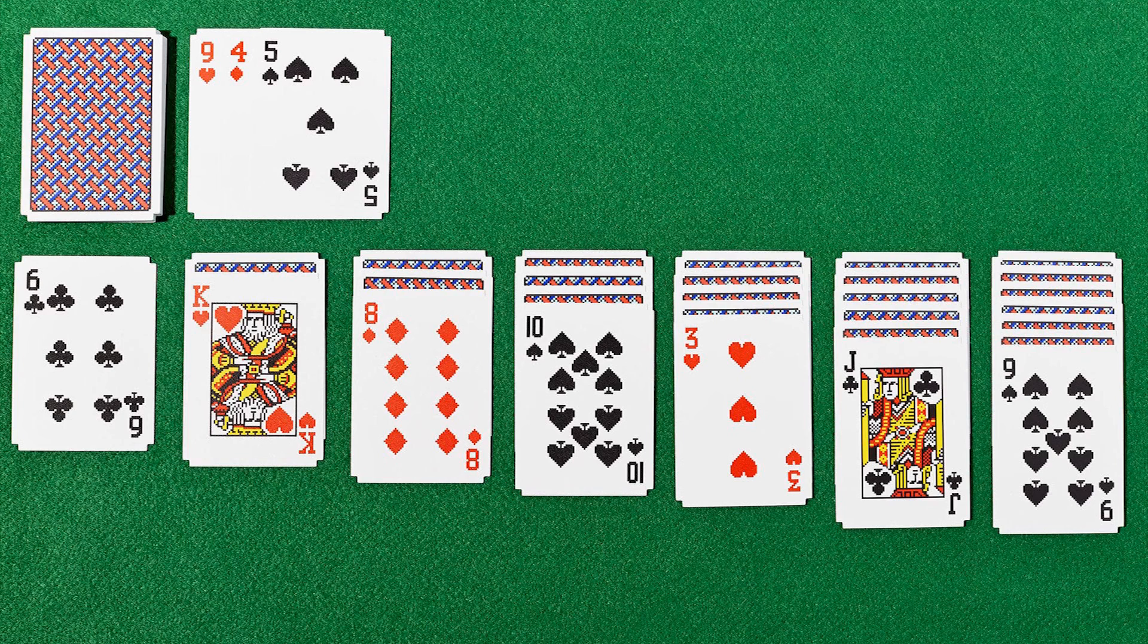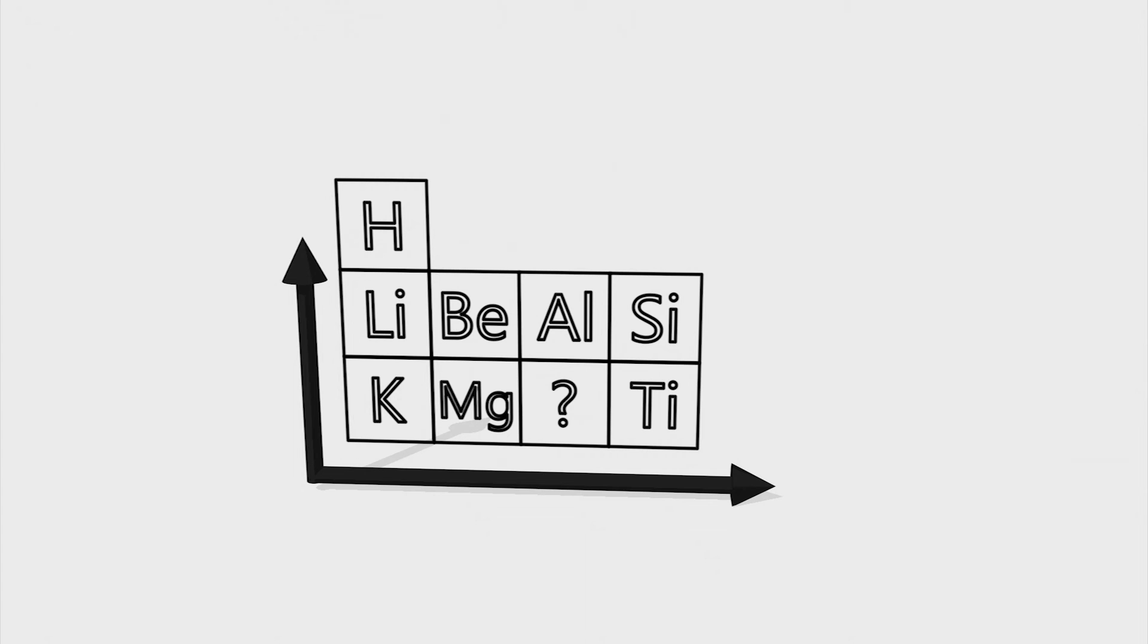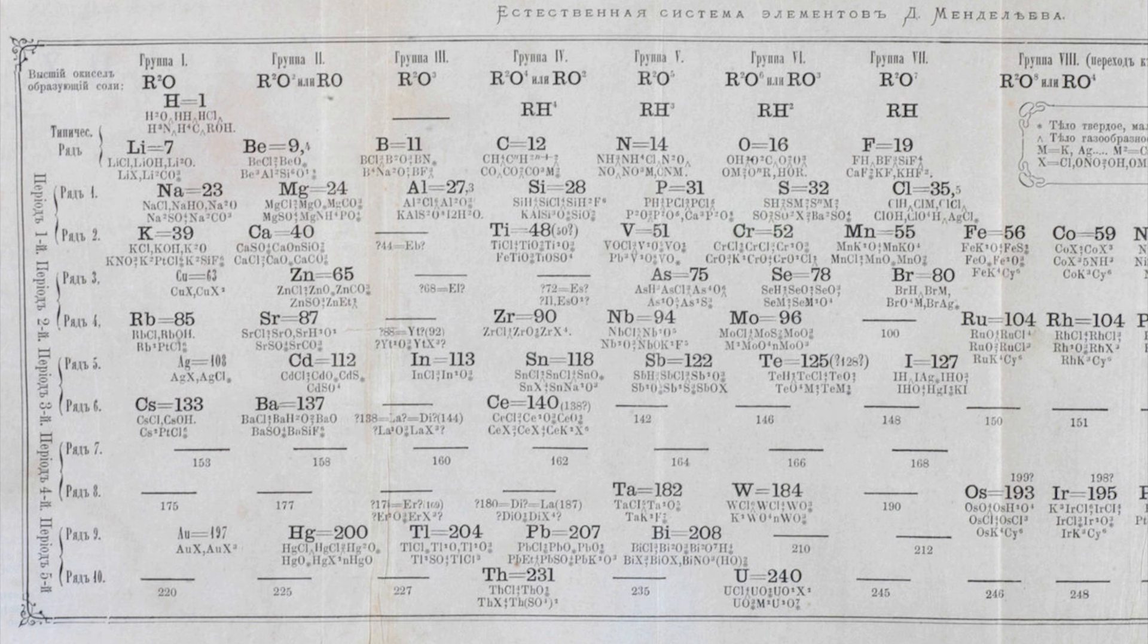I want to go through one more guy. Dmitri Mendeleev, a chemist, decided to play a round of solitaire with atoms. He arranged the known atoms in rows by chemical properties and in columns by atomic weights. Predicted unknown elements because when he arranged the known elements there were holes in his system.